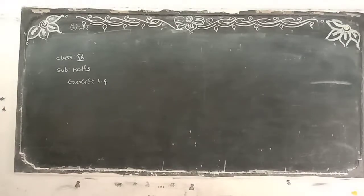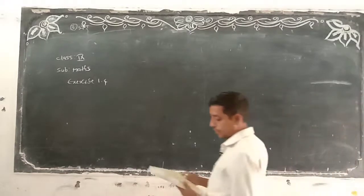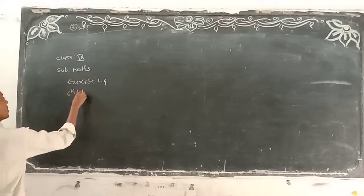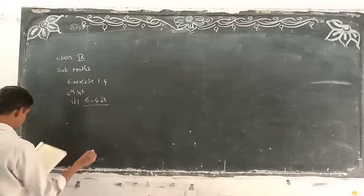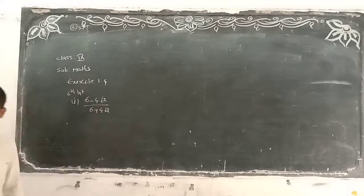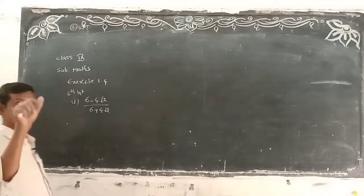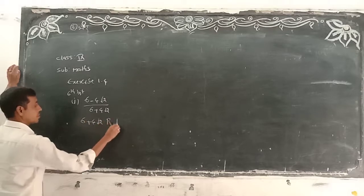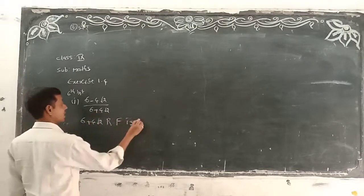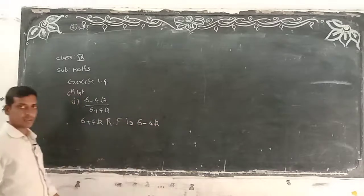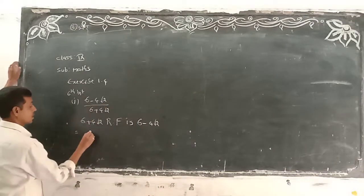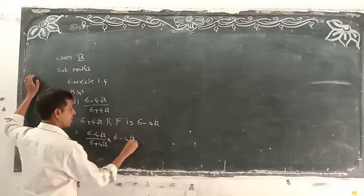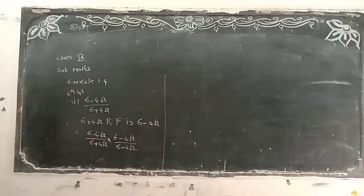Next is the sixth bit. Simplify each of the following by rationalizing the denominator. The problem is 2 divided by (6 plus 4 root 2). Write down the denominator as the RF: 6 plus 4 root 2. Change the sign — RF is 6 minus 4 root 2. Write down: 2 over (6 plus 4 root 2), multiplied by (6 minus 4 root 2) over (6 minus 4 root 2).